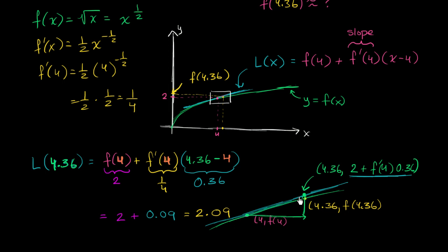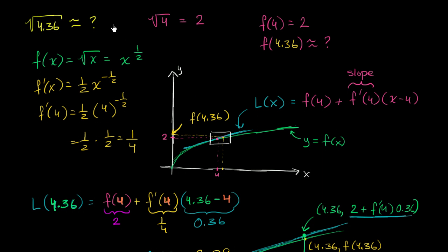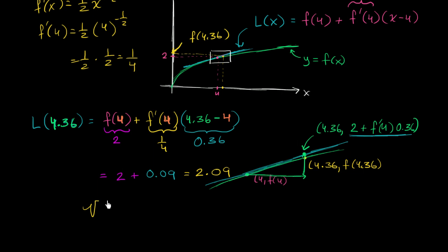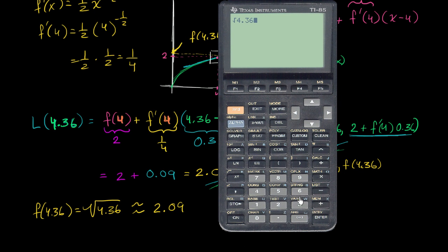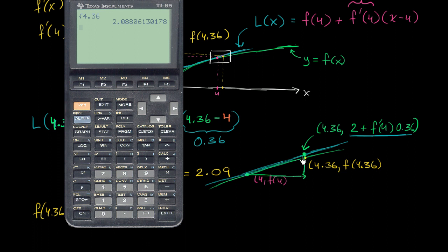So we can write that the square root of 4.36 — which is the same thing as f(4.36) — is approximately equal to 2.09. Now let's say we happen to find a calculator, just to see how good our approximation actually is. The square root of 4.36 is 2.088. So if we round to the nearest hundredths, we got a pretty good approximation. And just like we saw in the graph, our approximation was indeed a little bit higher than the actual value.